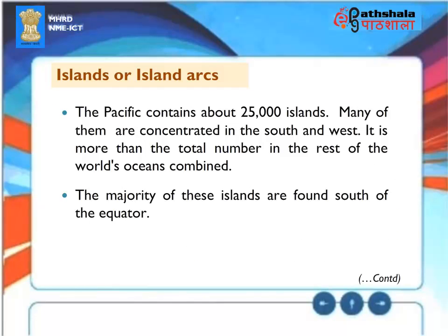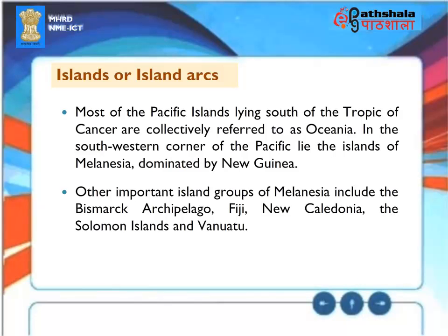Islands and Island Arcs: The Pacific contains about 25,000 islands, many concentrated in the South and West — more than the total number in all other world oceans combined. The majority of these islands are found south of the equator. Most Pacific islands lying south of the Tropic of Cancer are collectively referred to as Oceania. In the southwestern corner of the Pacific lie the islands of Melanesia, dominated by New Guinea. Other important island groups of Melanesia include the Bismarck Archipelago, Fiji, New Caledonia, the Solomon Islands, and Vanuatu.